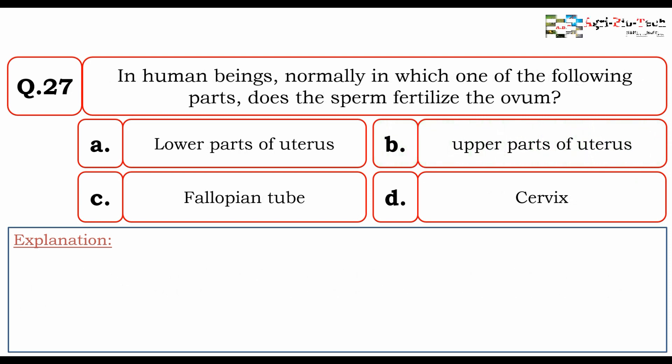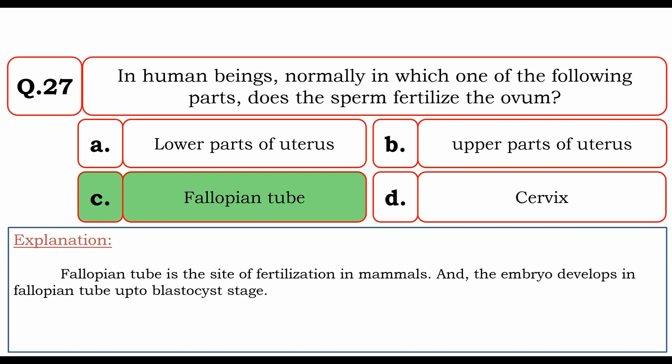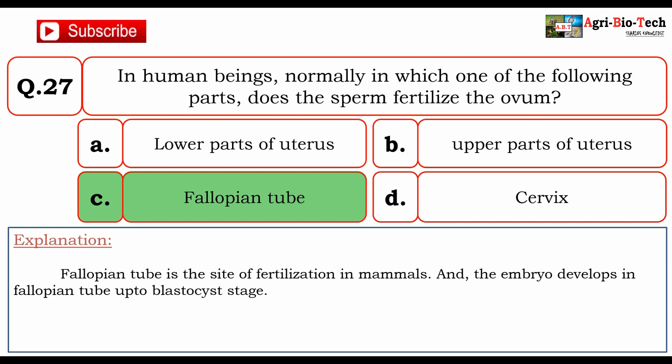In human beings, normally in which part does the sperm fertilize the ovum? Options: A. lower parts of uterus, B. upper parts of uterus, C. fallopian tube, D. cervix. The correct answer is C. fallopian tube. The fallopian tube is the site of fertilization in mammals, and the embryo develops in the fallopian tube up to the blastocyst stage.